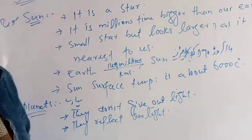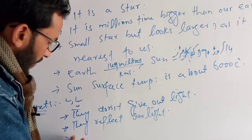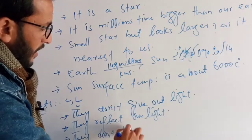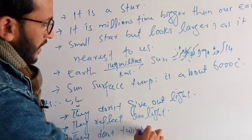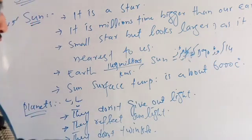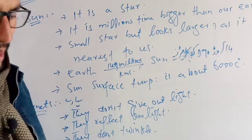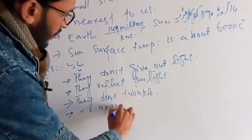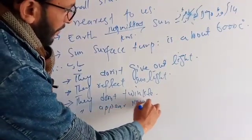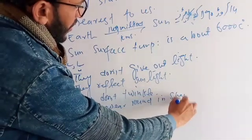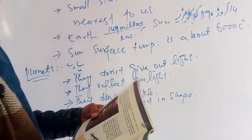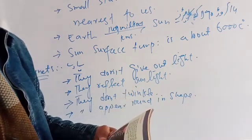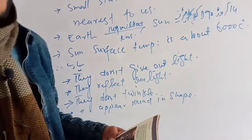Planets do not twinkle. They appear round in shape. If you look at the sky at night you can see the planets clearly.